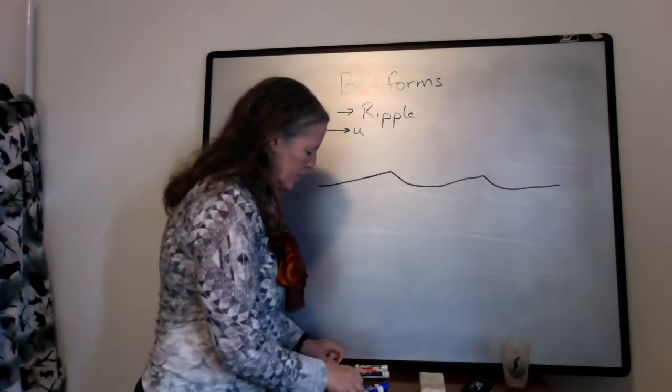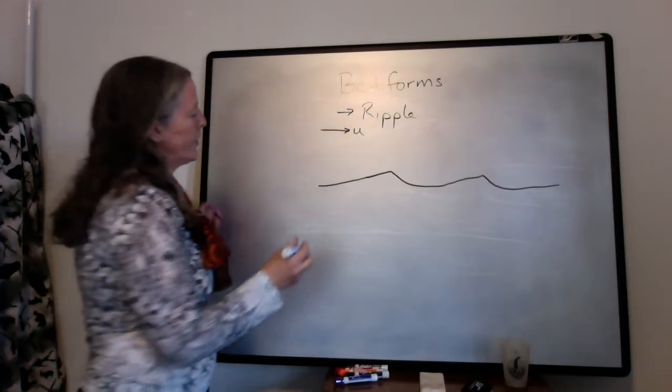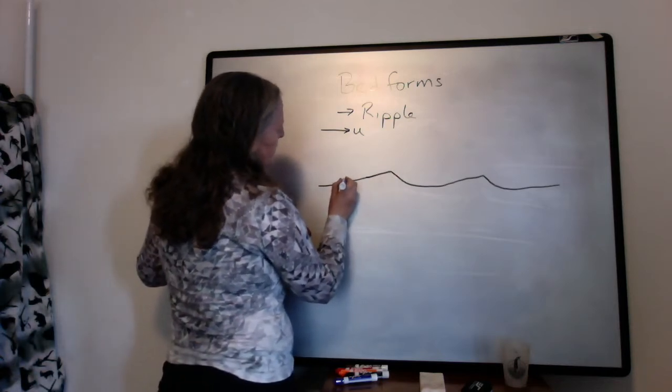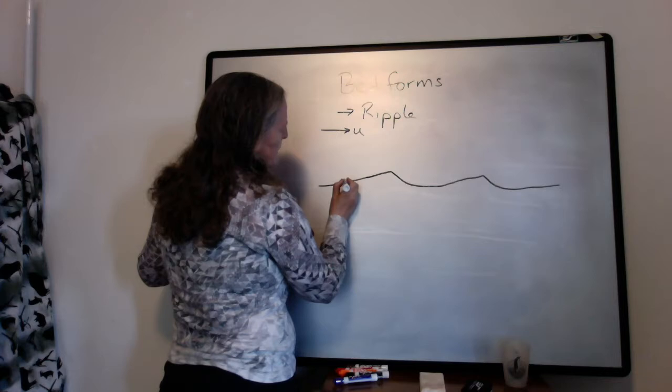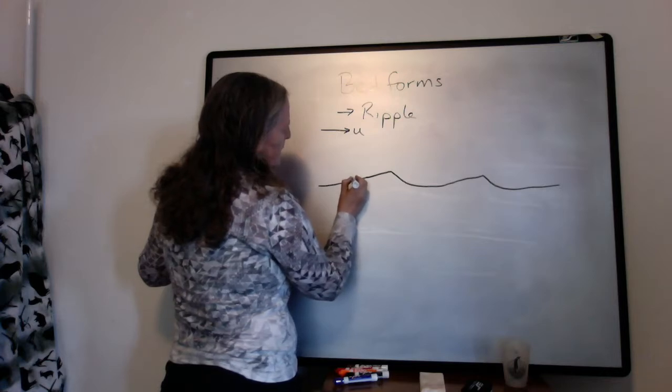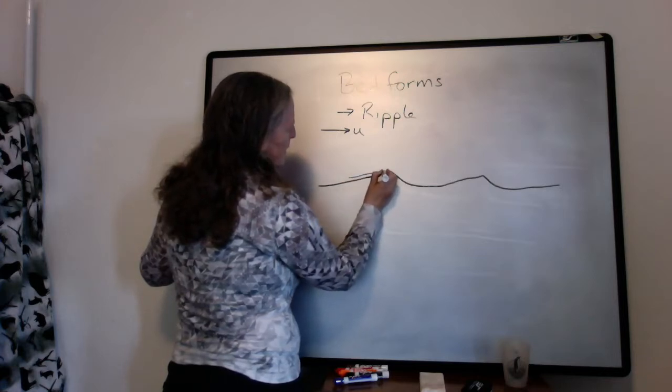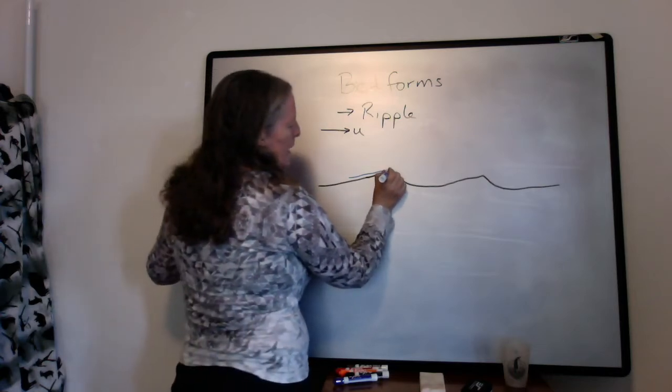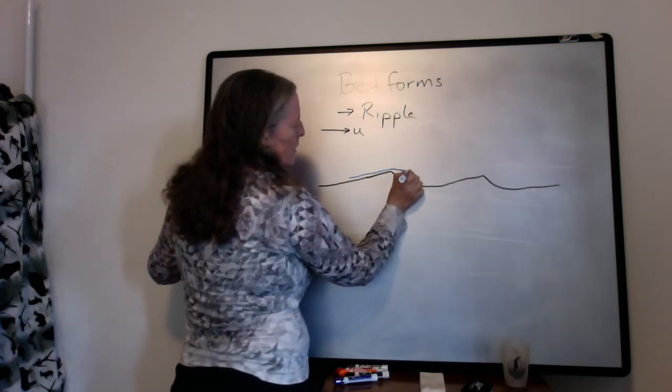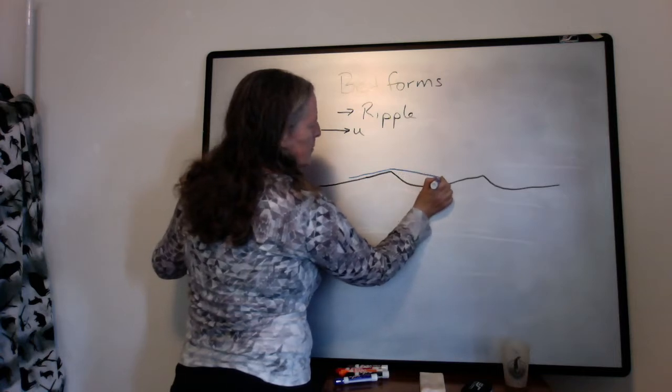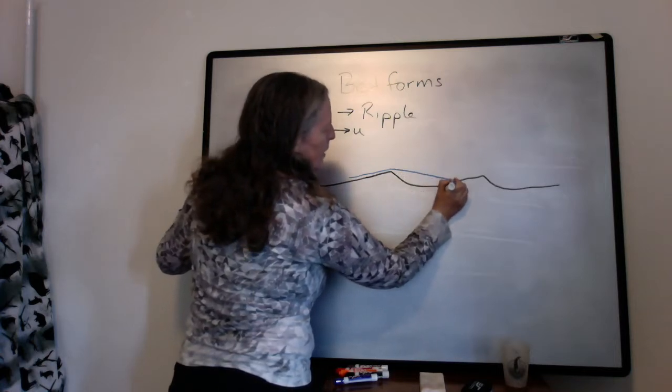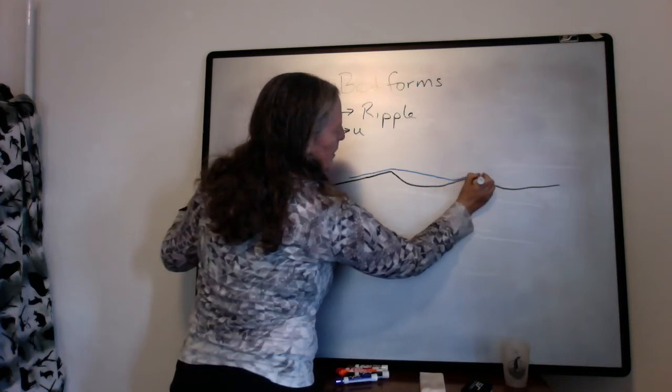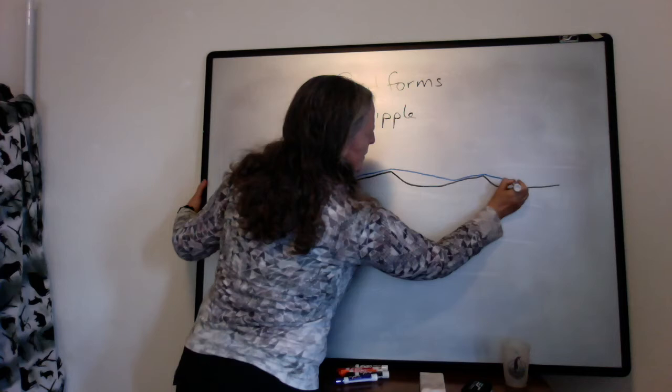We talked a little bit about how the flow varied with respect to the ripple in the last video. Basically you have water flowing here, it gets to the top of the ripple and it overshoots, and then it comes back down to the bed on the back of the next ripple. The same process happens again.